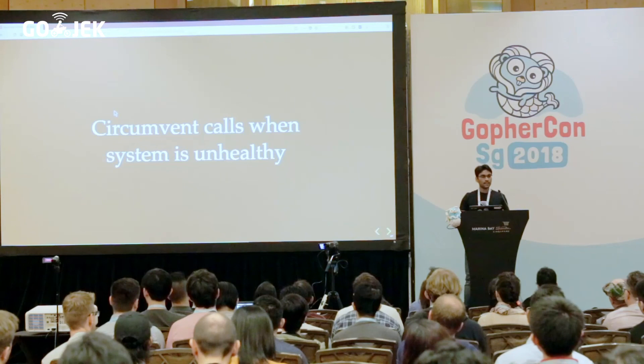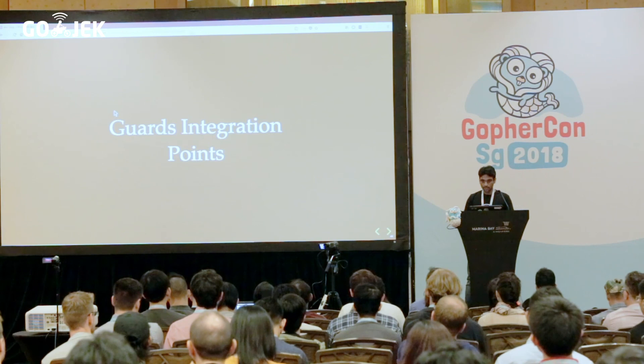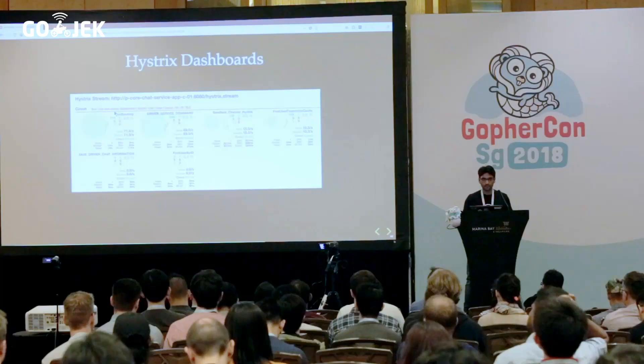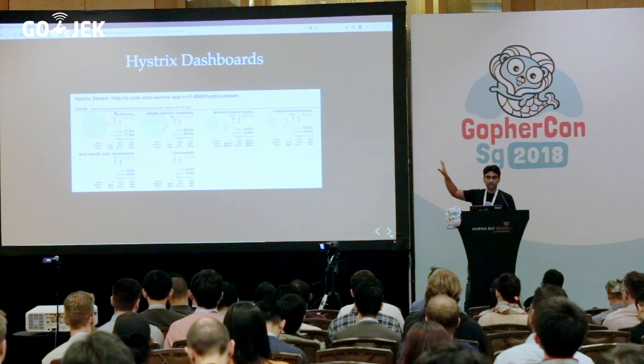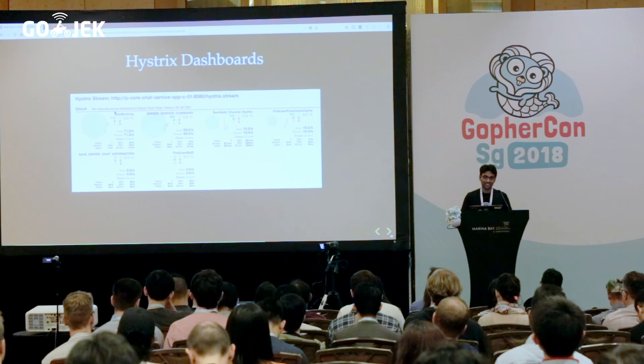Circuit breakers help circumvent calls when the system is unhealthy — when a considerable service is unhealthy, you don't want to make calls to it and you want it to recover. You fail fast, and it helps guard your integration points from cascading failures. One important thing is that you need metrics and monitoring when you implement circuit breakers at your integration points — you want to continuously know what is happening: whether it's failing, succeeding, or if there's a problem. A typical dashboard at Gojek shows everything green when well, and goes red when there's a problem.